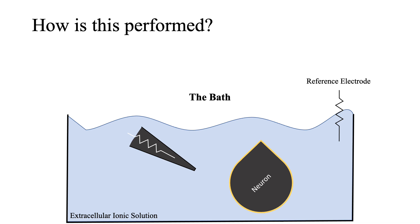The recording electrode is filled with an ionic solution that mimics the concentration of ions inside of a neuron. The solution inside the recording electrode is referred to by an electrophysiologist as internal. The electrode is submerged in the recording chamber, also known as the bath. The bath is also an ionic solution and the concentration of ions usually mimics a relevant extracellular media. You can also change the composition of ions or add pharmacological reagents in the internal or the bath to test different ideas.